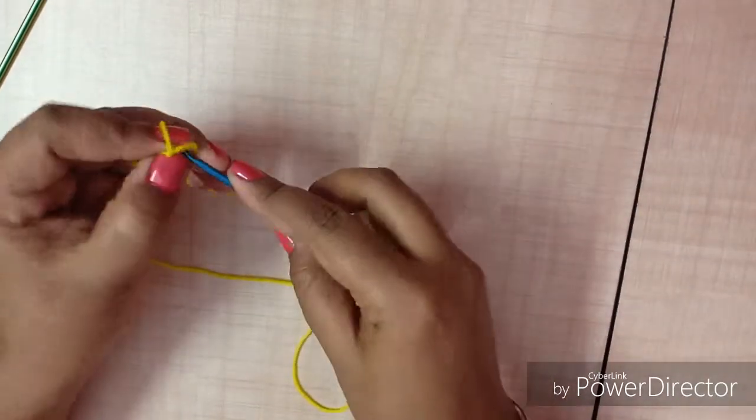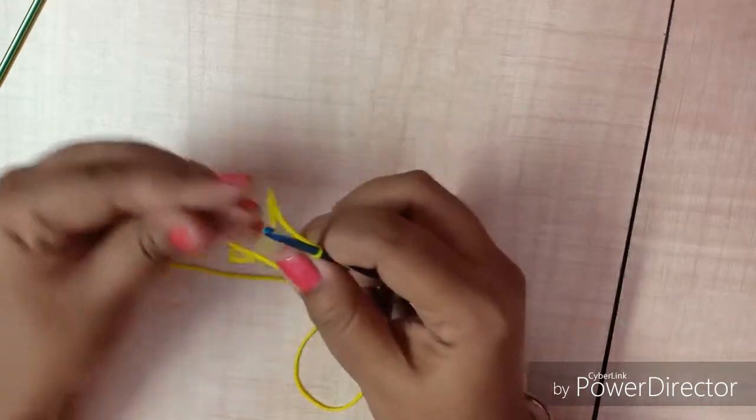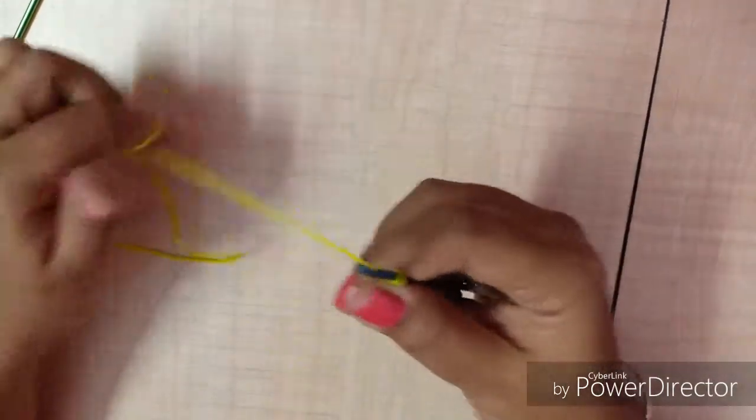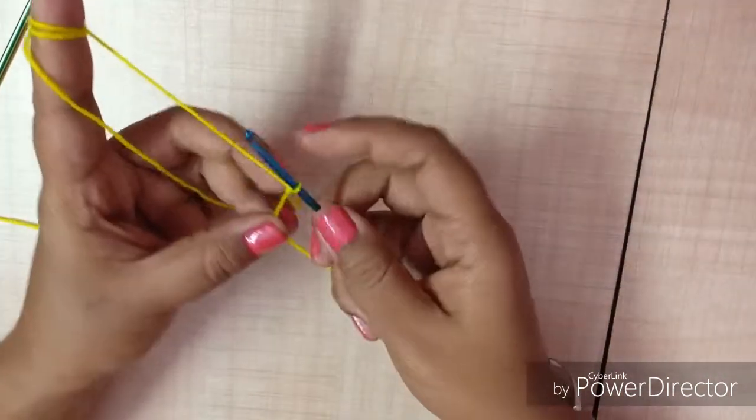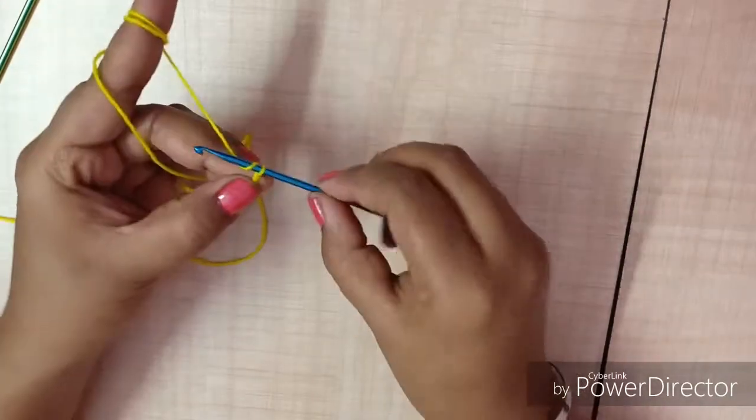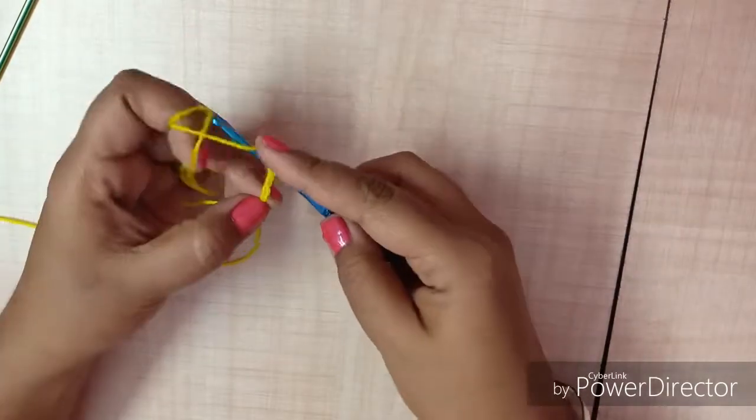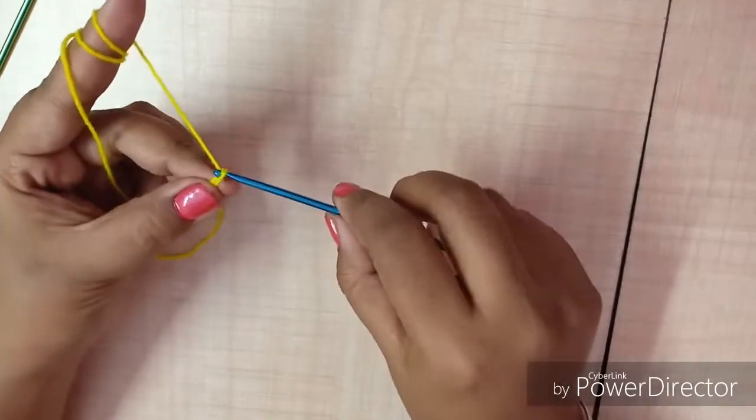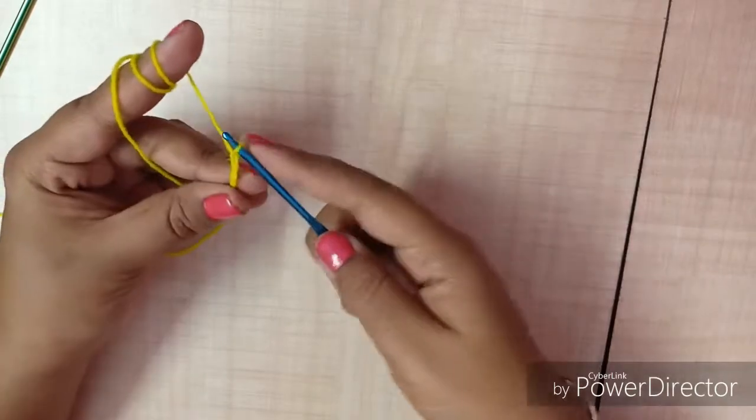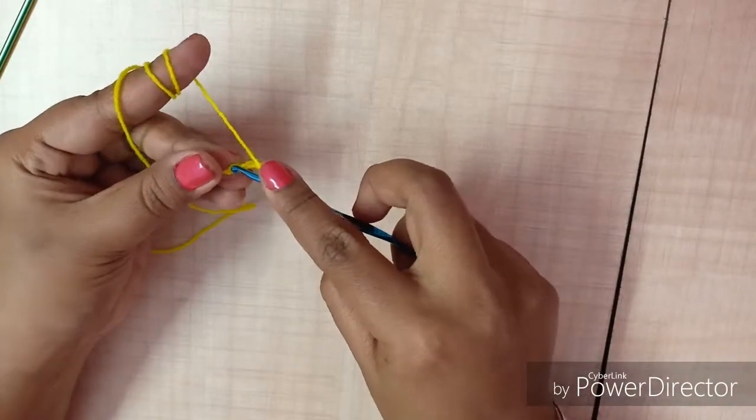First make a knot with the hook. Hold the yarn like this and make a chain. 1, 2, 3, 4, 5, 6. And go to the last loop and pull through.